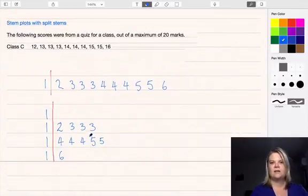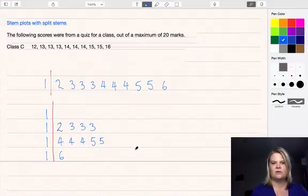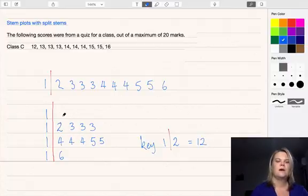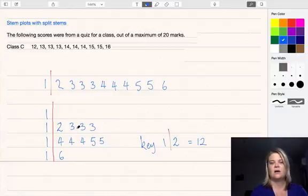Once you have a stem plot drawn and I've forgotten to draw a key here so I might just add that in. Key one slash two equals twelve.